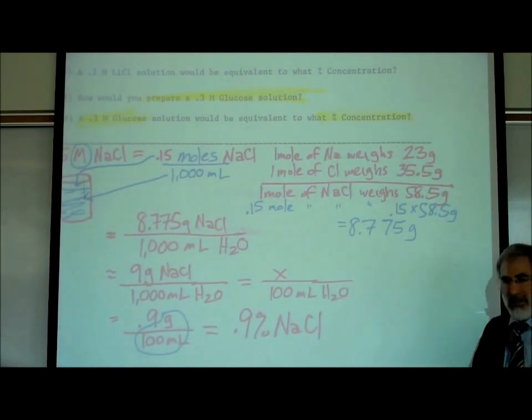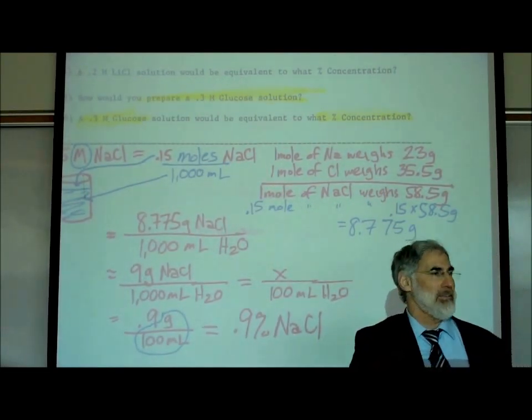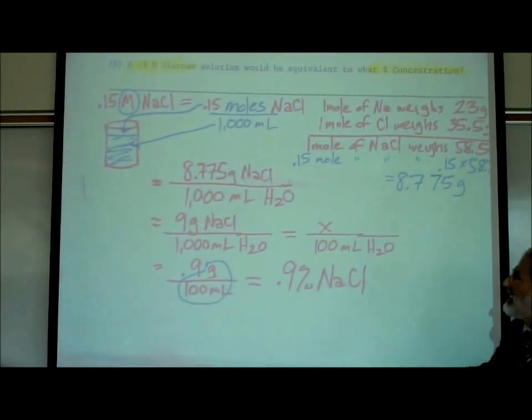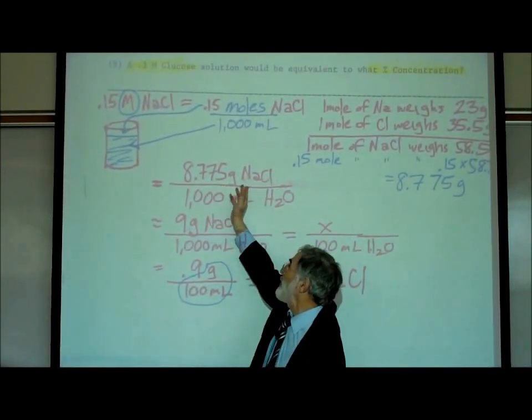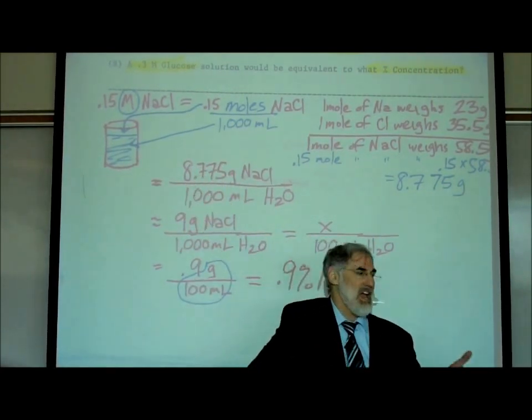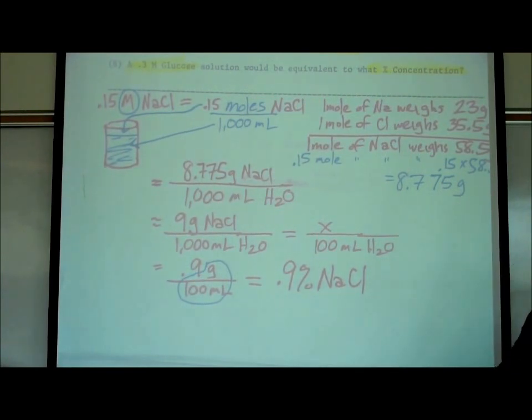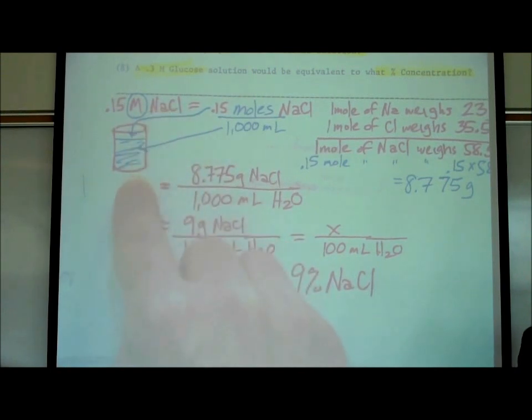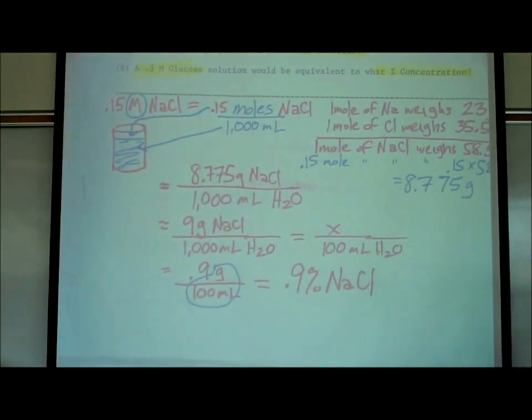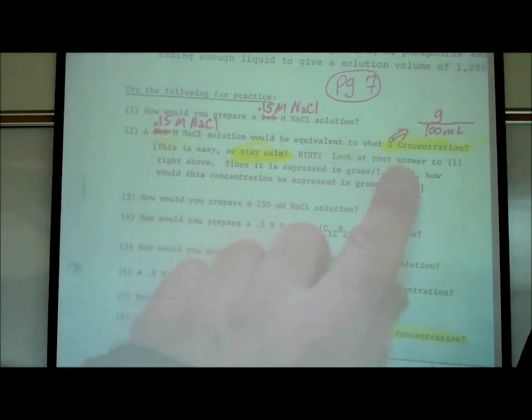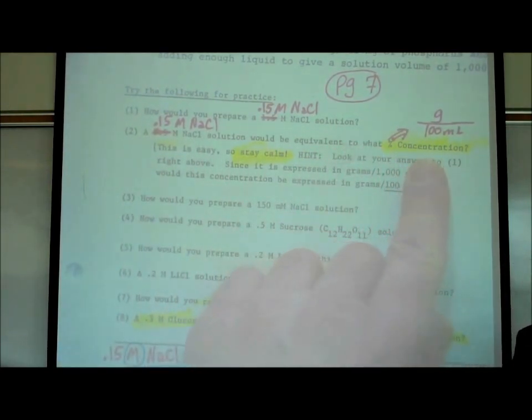Now, we're not dealing with the subject of significant figures, which they talk about in a chemistry course. So I don't even care if you round this off to 9 grams. All you're going to do is add 8.775 grams of salt or 9 grams of salt, weigh it out, and pour it in 1,000 milliliters of water, which is a liter of water. You stir it and you have created a 0.15 molar salt solution. Okay, that was how we do question number one.